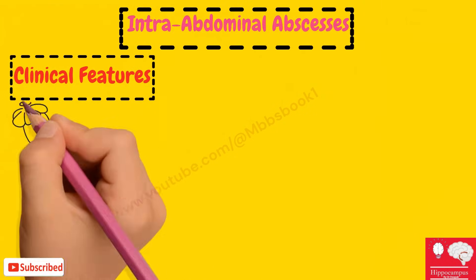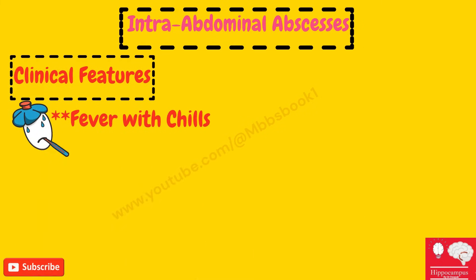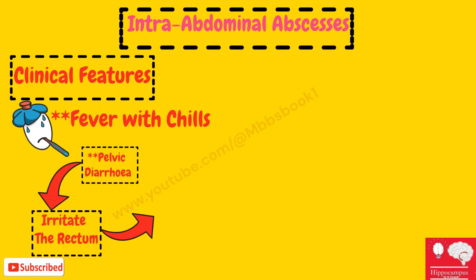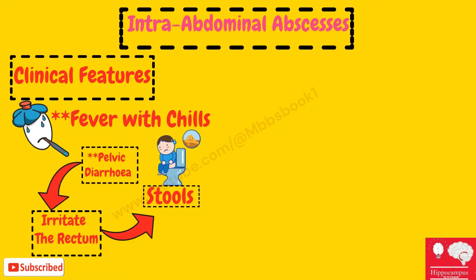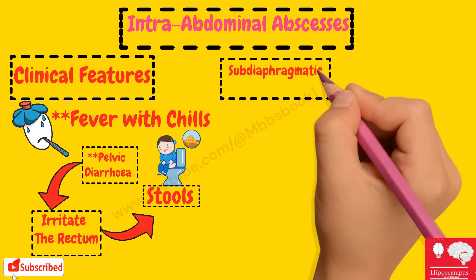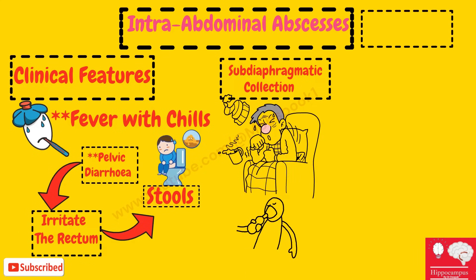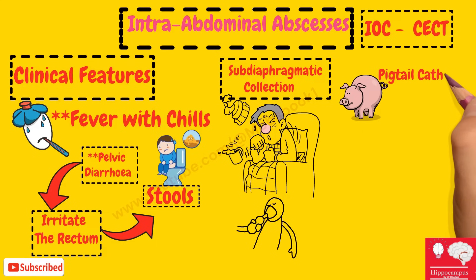Clinical features of intra-abdominal abscesses include spikes of fever with chills and rigors. If there is a collection in the pelvis, the peculiar presentation is pelvic diarrhea — the collection irritates the rectum causing increased frequency of stool, but the patient complains that stool is mainly mucous with some fecal matter. If there is a sub-diaphragmatic collection, the patient can have cough or breathing difficulty. The investigation of choice for diagnosis is CECT, and a pigtail catheter is used to drain the collection.